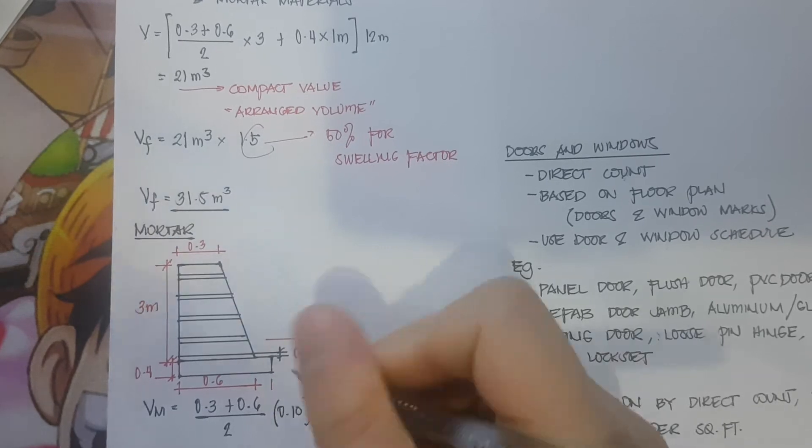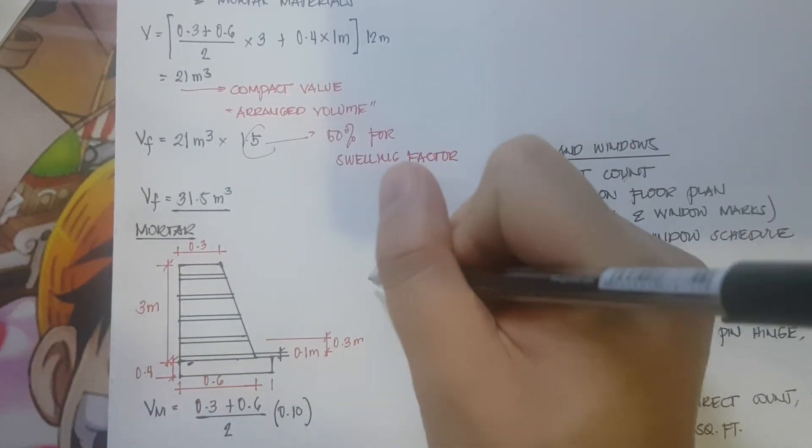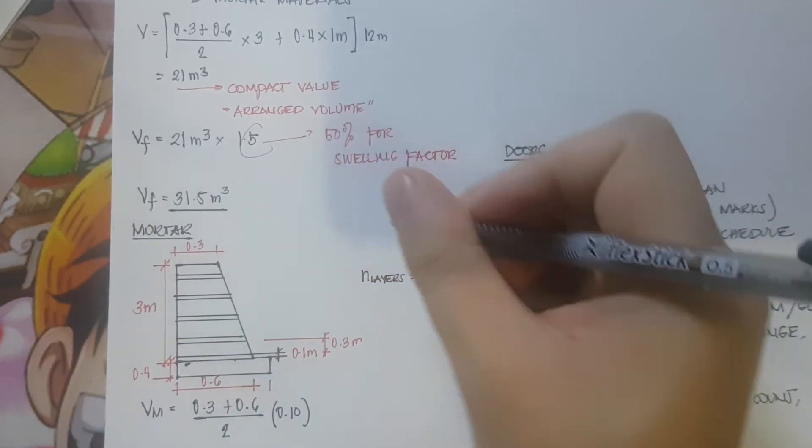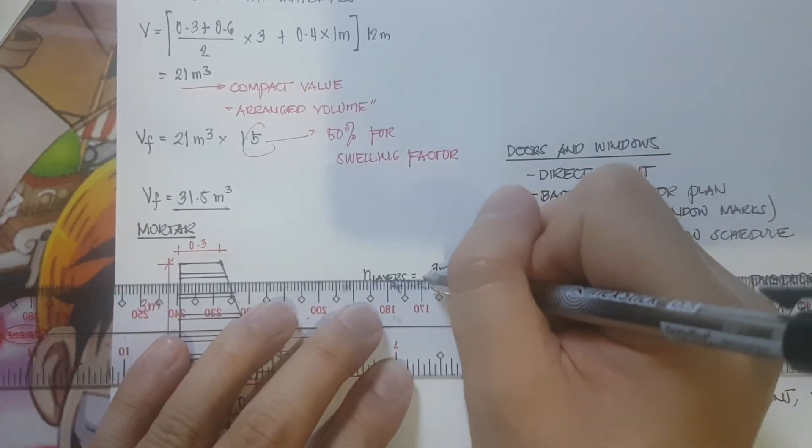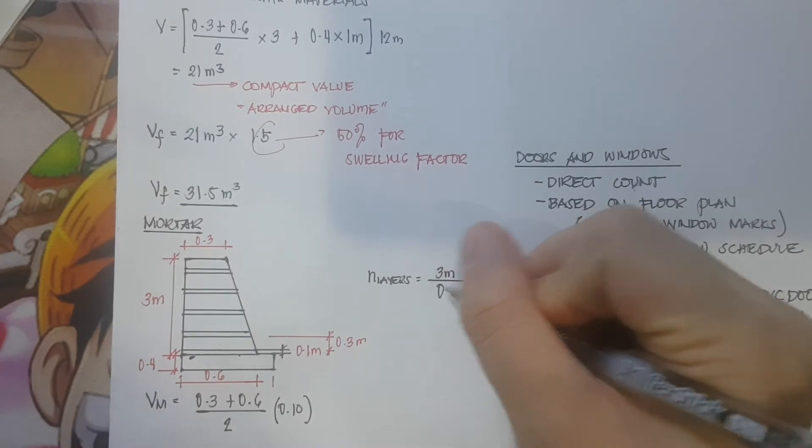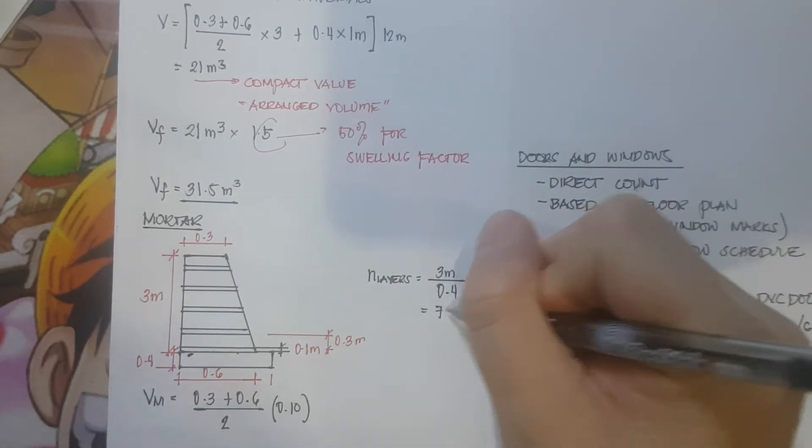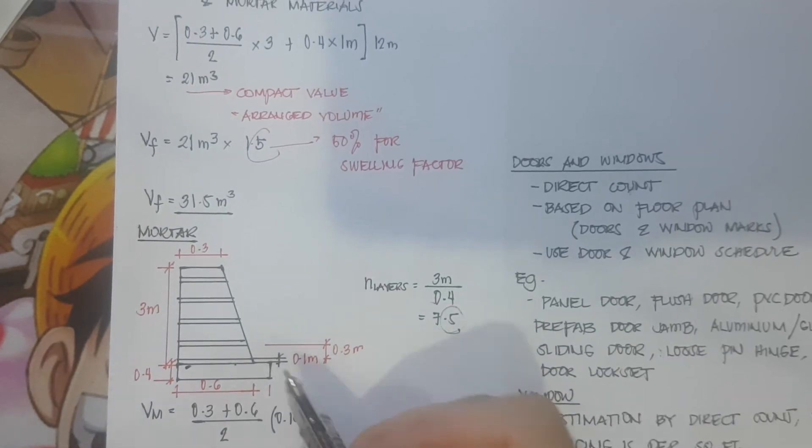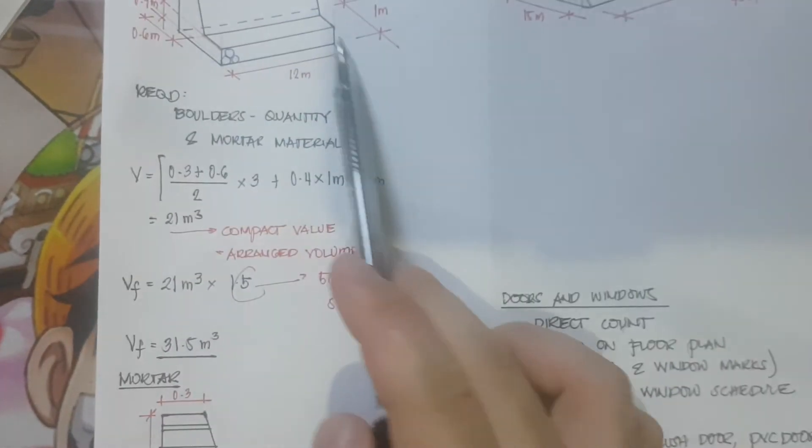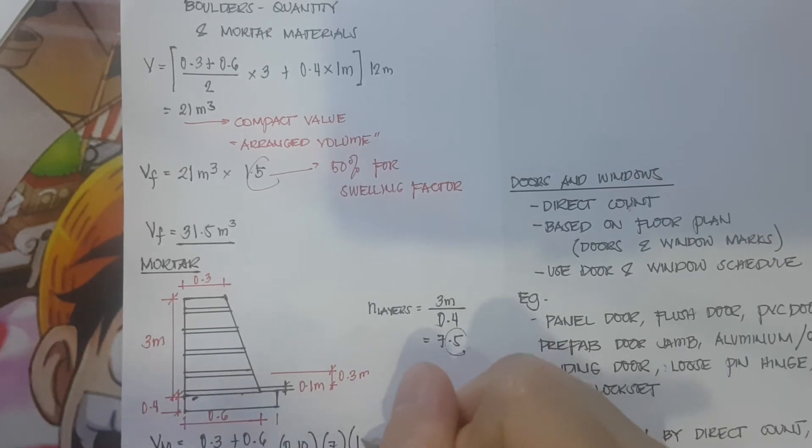Now the question is how many layers of mortar are we going to have? Number of layers: we have 3 meters divided by 0.4 - 0.3 for the depth of the boulder plus 0.1 for the thickness of the mortar. For the number of layers we will be having 7.5, so we drop the decimal and use 7. We multiply 7 here, times the length of your reprop wall, and that is 12 meters.